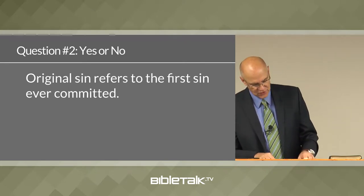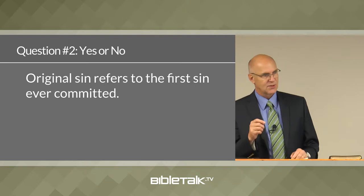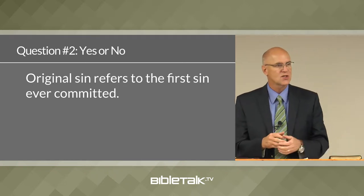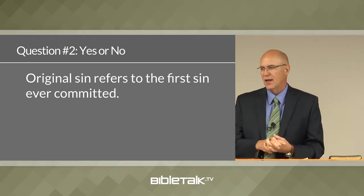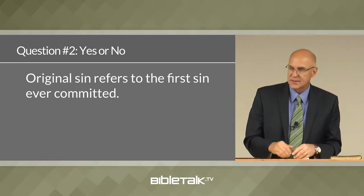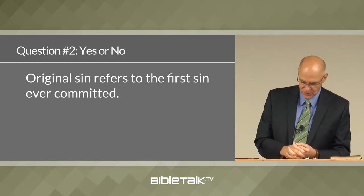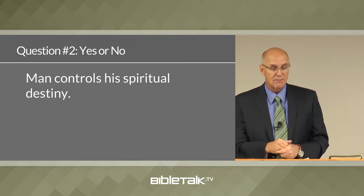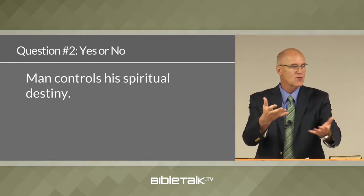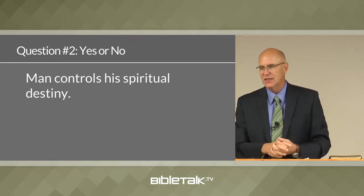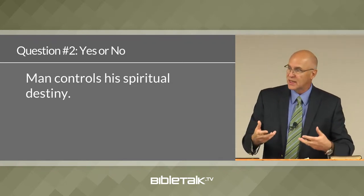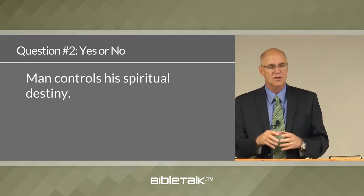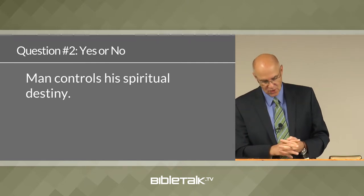Original sin refers to the first sin ever committed — the answer is no. It's almost a trick question. Original sin refers to a theological position originally put forward by Augustine and developed by Protestant reformers. Man controls his destiny — the answer is yes. God offers salvation and man can refuse or accept. Even though his nature is weakened because of sin, he still has the ability to understand the gospel, believe it, and say yes or no to God.